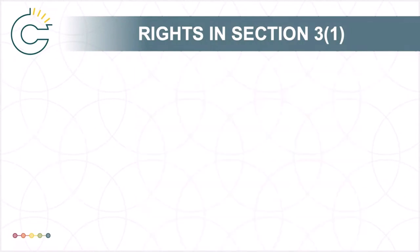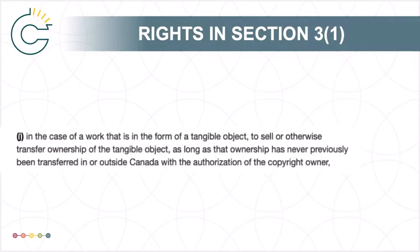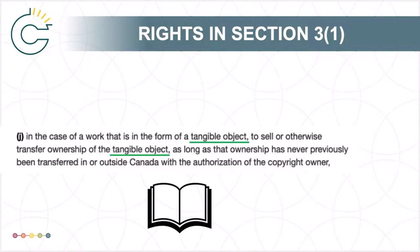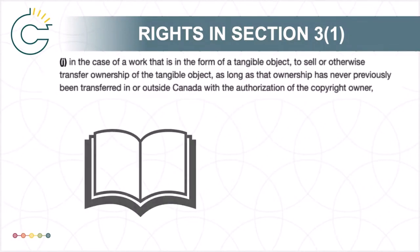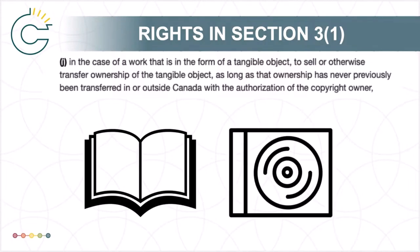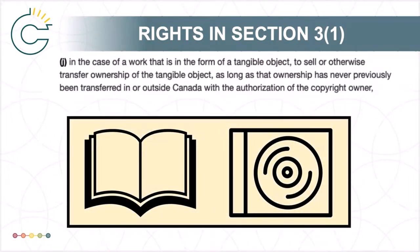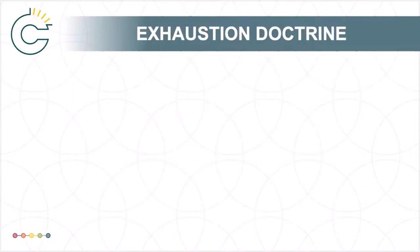Subsection 3.1(j) includes another awkwardly worded but important sole right. The subsection notes that in the case of a work that is in the form of a tangible object. In regard to the tangible object piece, this is a way of talking about a book, a vinyl record, a CD, or a DVD, but not just the digital file. Essentially, it's referring to the container of an intellectual good. So, as a rights holder, if you have your intellectual work embodied in a physical object, like a book or a CD, you can control the right to sell that object. However, this right is not absolute — your ability to limit the sale of the tangible object applies only to the first sale.